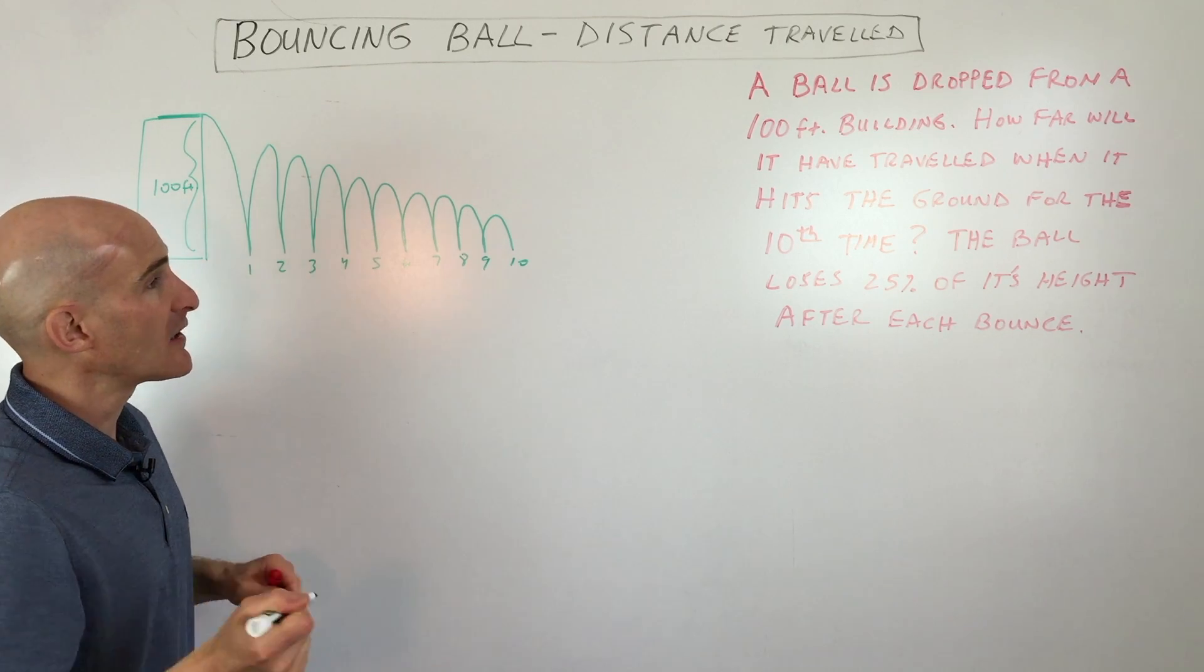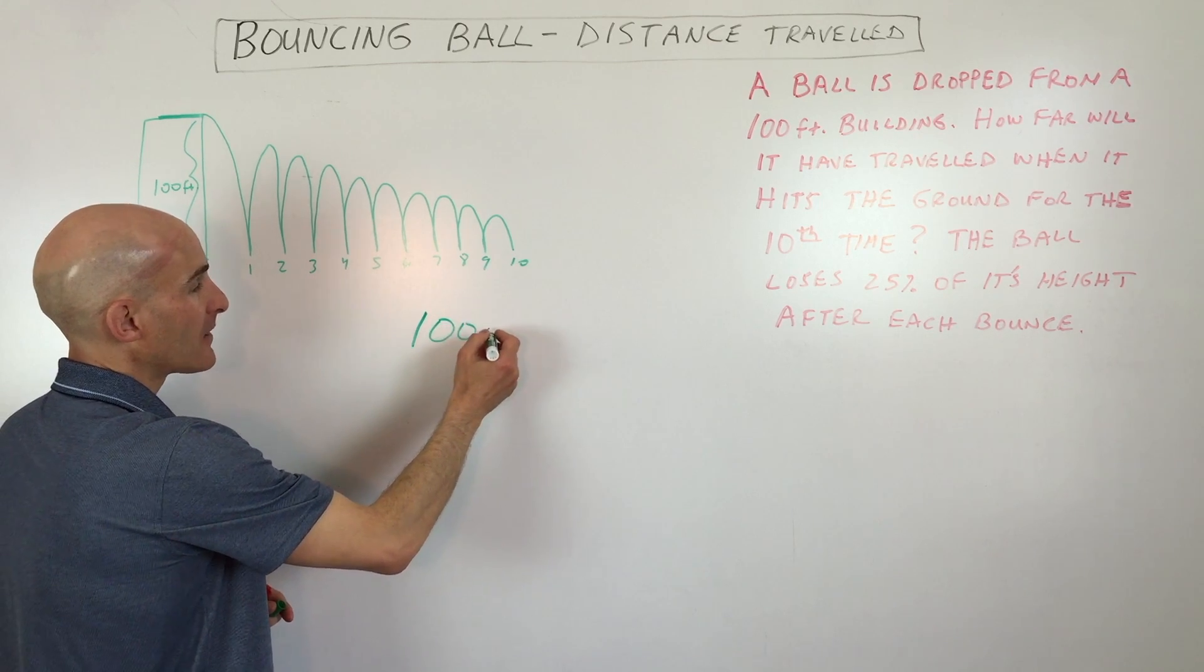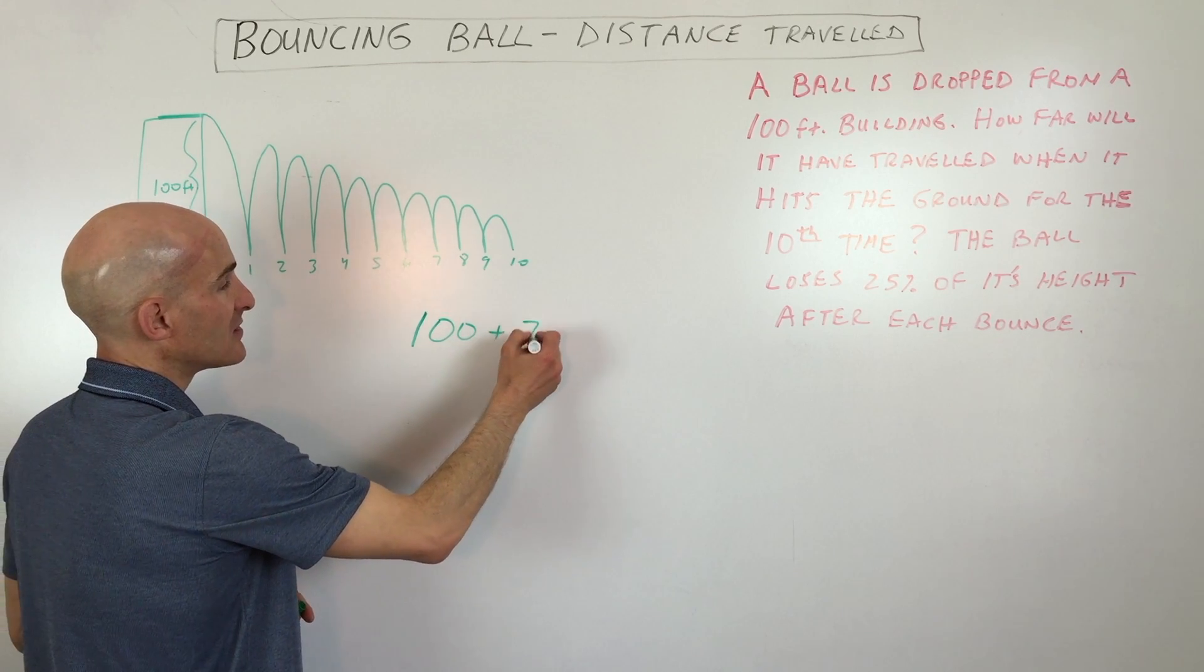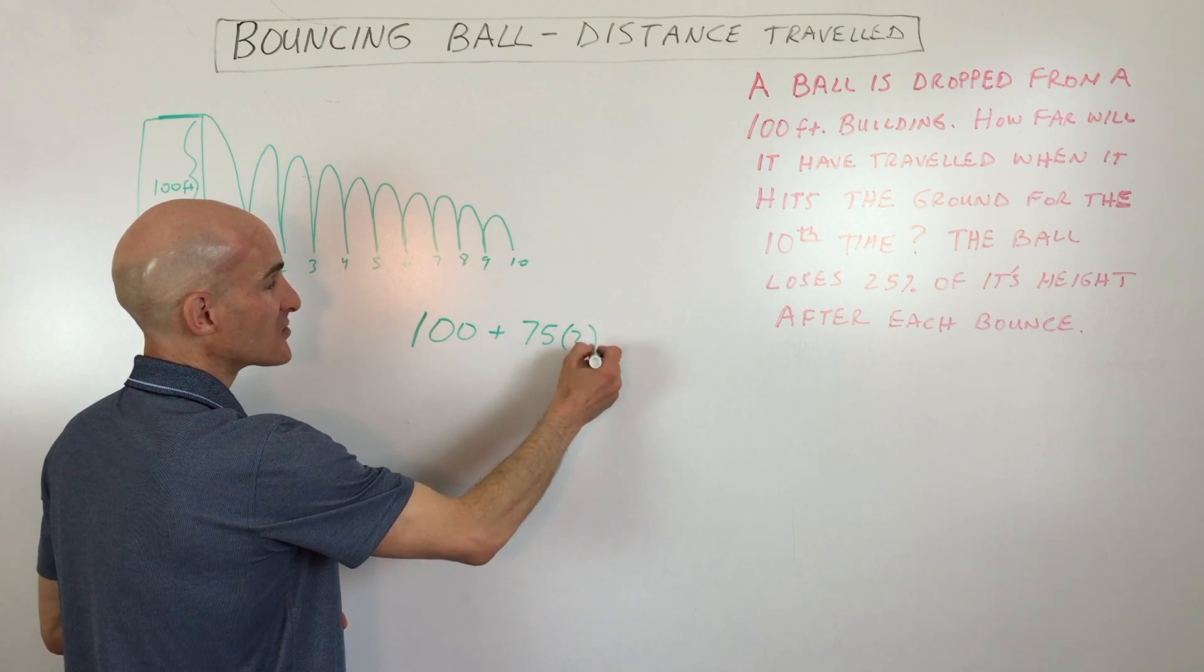So what we're going to do is we're going to look at a few of these terms in the sequence. So the first term is 100, right? Then the next term is going to be 75. And then the next term after that, of course, you're going to have two of these, right?